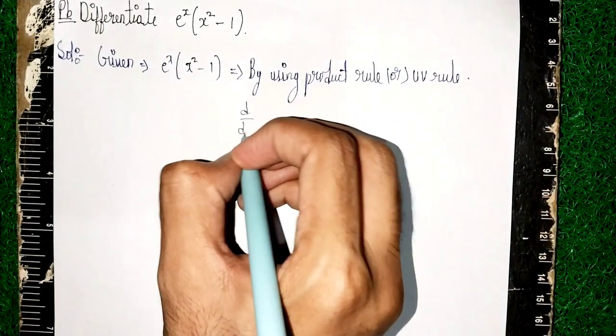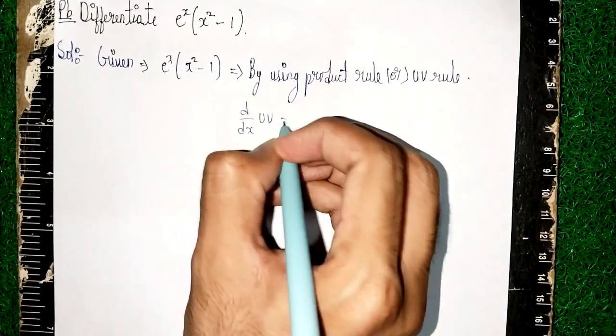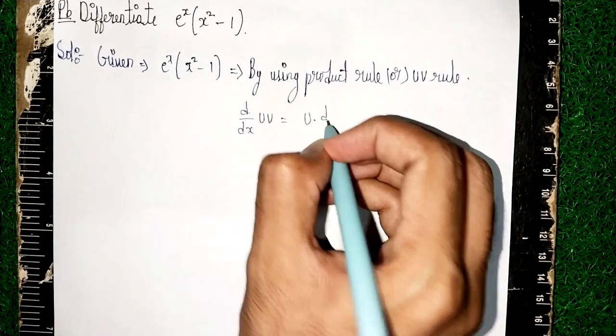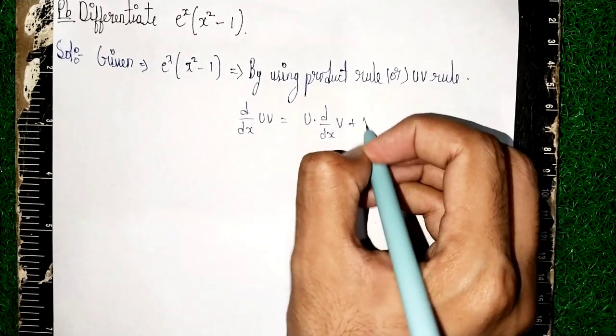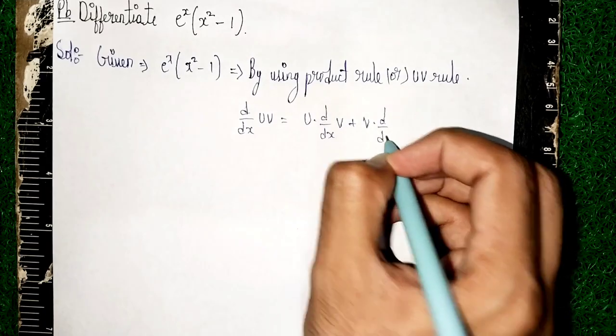So d/dx of u into v, it becomes u into d/dx of v plus v into d/dx of u.